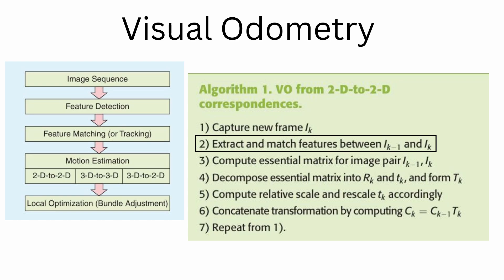Now for motion estimation, I said we want to find T of K. So what we do is we compute the essential matrix for image pair I_{k-1} and I_k. So using the features that we've matched or tracked. Once we have our essential matrix, we will decompose it into the rotation matrix and the translation vector. The rotation matrix and the translation vector put together is actually T of K. So that is your transformation matrix that relates C of n minus 1 and C of n. Now you also have to compute relative scale and rescale T of K accordingly for monocular vision. That's because in monocular vision, you cannot estimate the units.